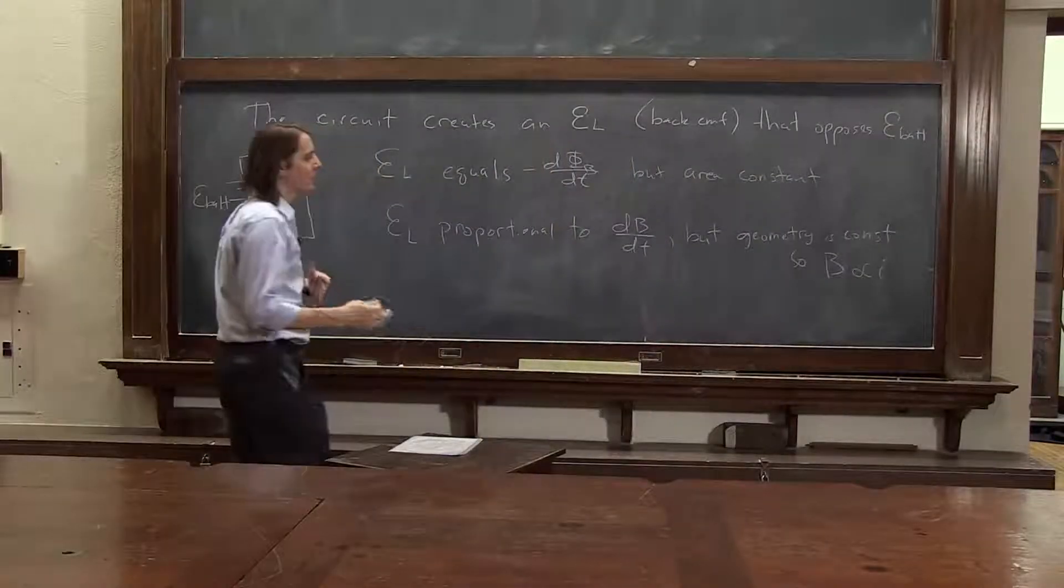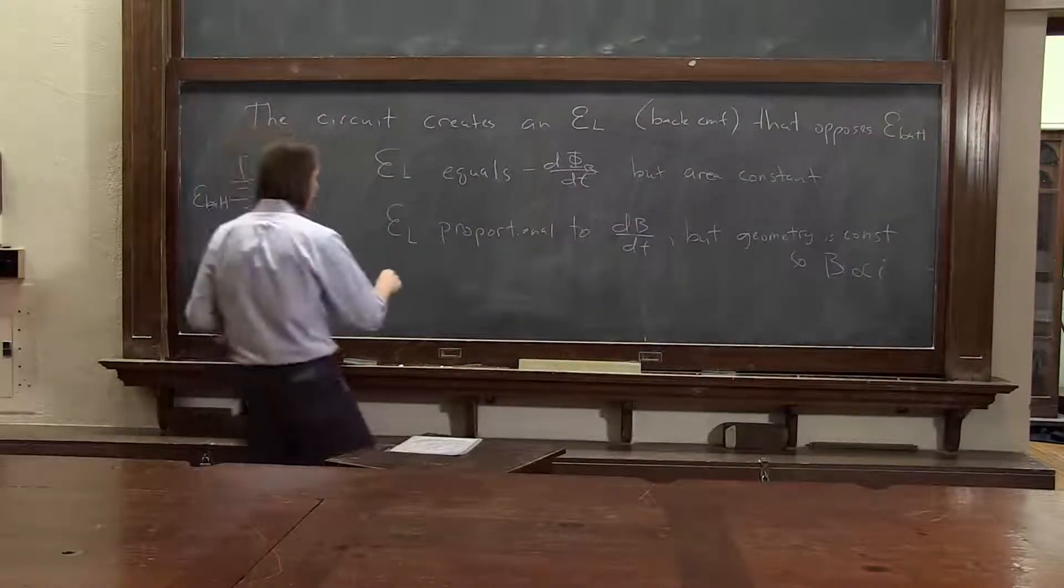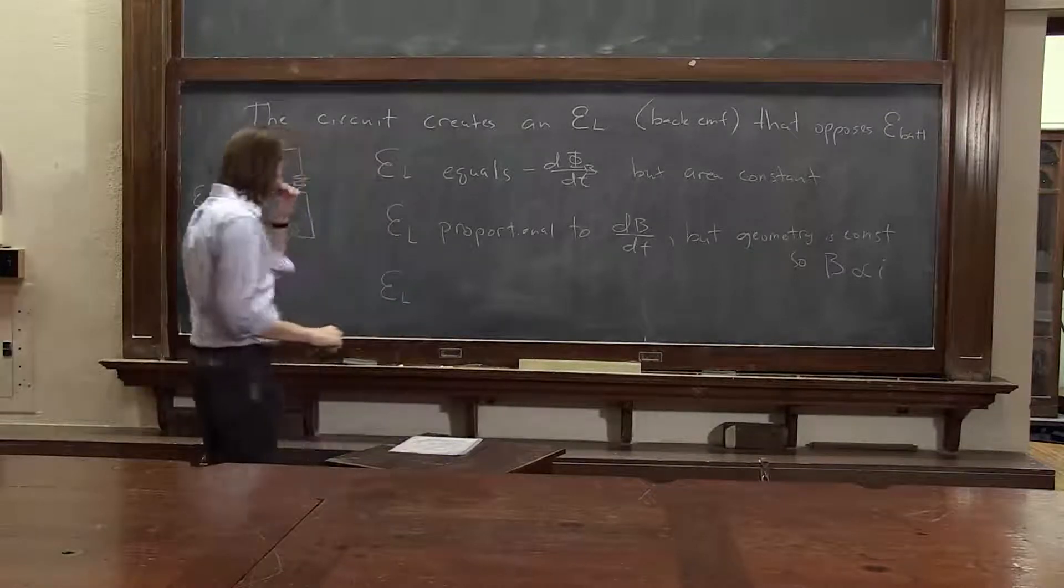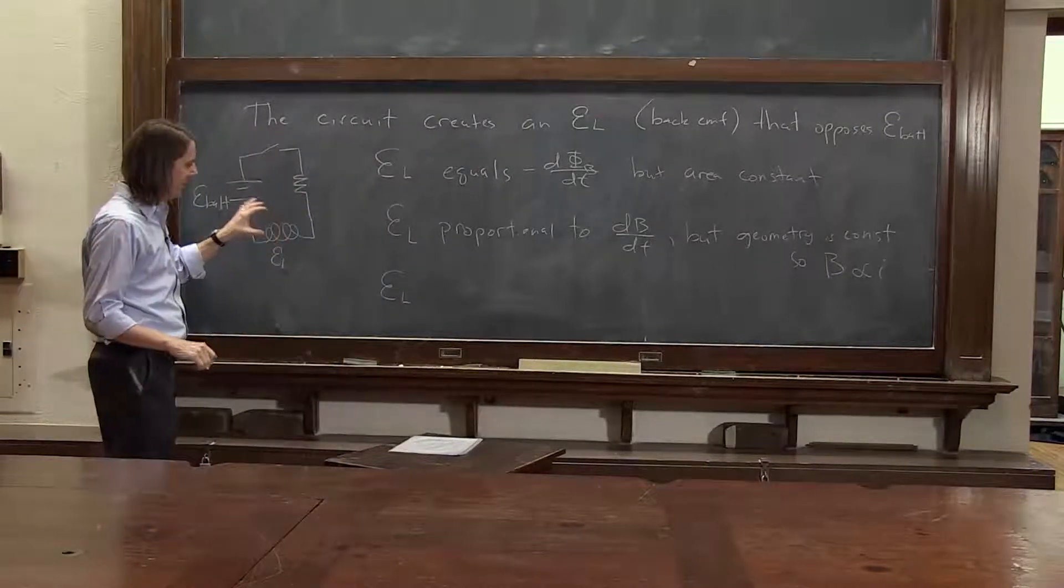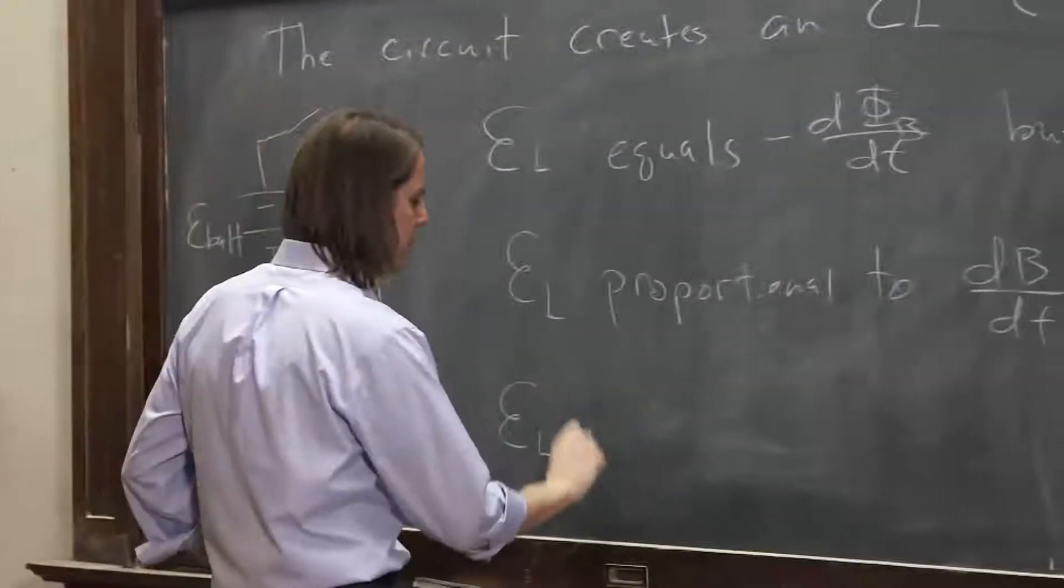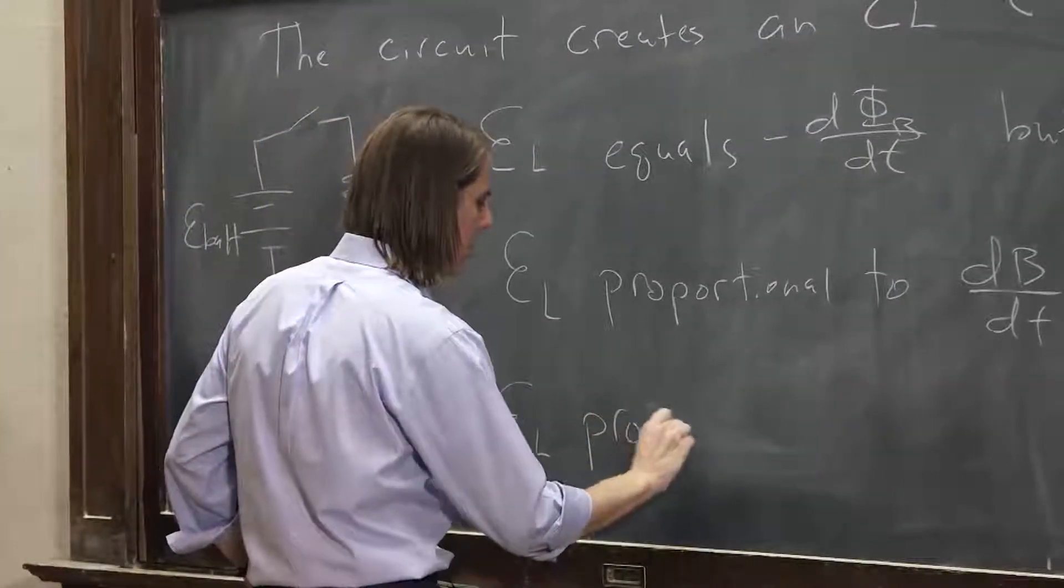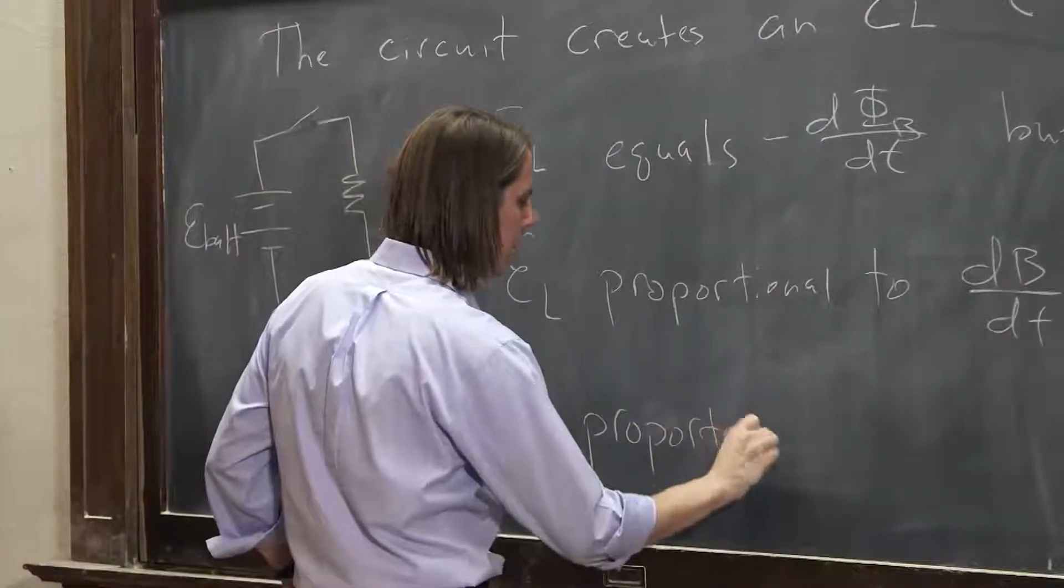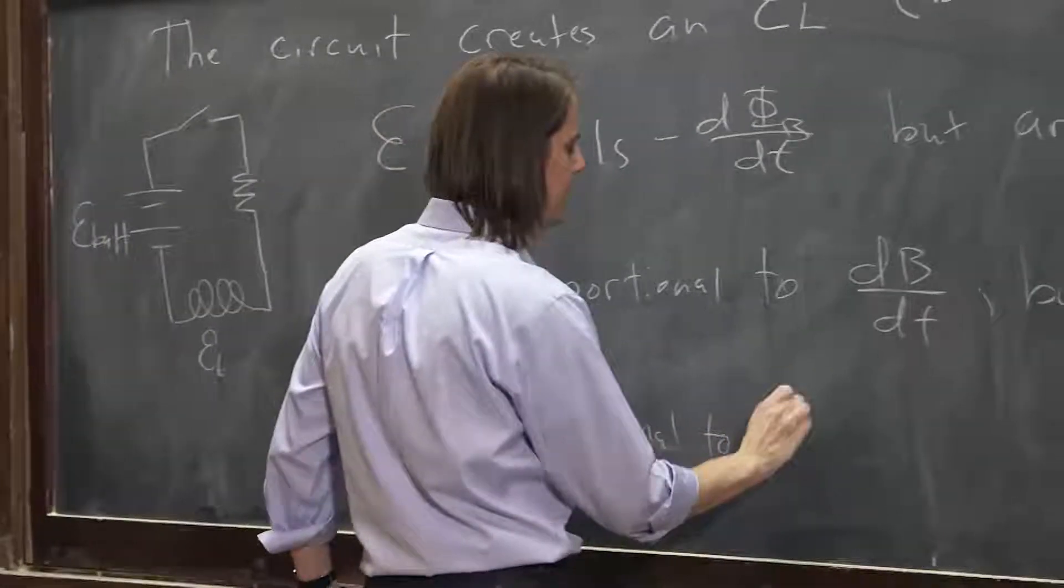So if we know that B field is proportional to the current, then here's what we want to do. We want to notice, then, that the EMF induced in this little thing is proportional to dI dt.